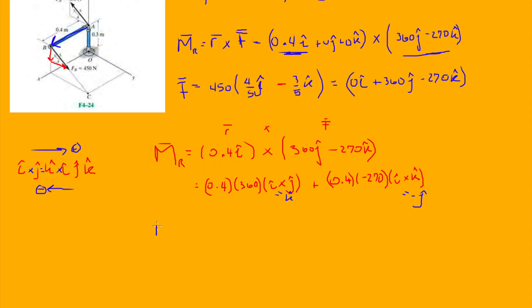Alright, and now my resultant moment would be 0.4 times 360, so it's 144, that's positive. And then 0.4 times 270, and then negative negative go away, and then we have 108 in the J direction. So that is newton meters. Alright.